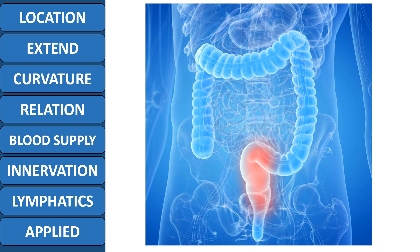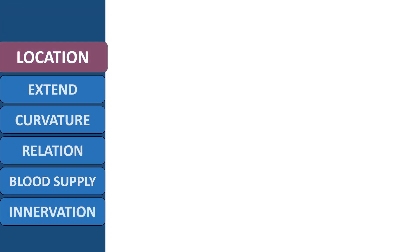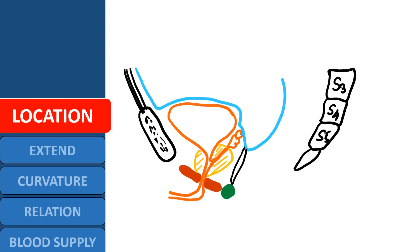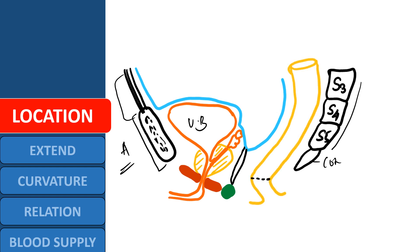Let me start with its location. The rectum is located in the posterior aspect of the pelvis. Anteriorly, the pubic bone and anterior abdominal wall are present, and just behind that is the urinary bladder. Posteriorly, we have the sacral and coccyx vertebrae. The rectum is located close to the sacral vertebra, starting from S3, and extends up to the tip of the coccyx — roughly 2.5 cm in front and below the tip of the coccyx.